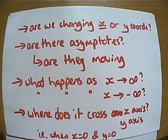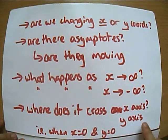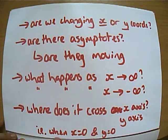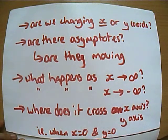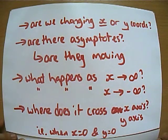And then, I suppose, the main other things to think about are where is it going to cross the x-axis and the y-axis? Or to put it a different way, when x is 0, what's the y coordinate? When y is 0, what's the x coordinate? So given this kind of checklist of things to think about, let's do some graph sketching.